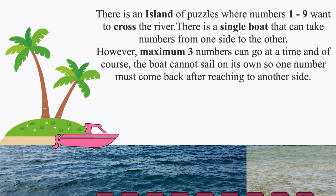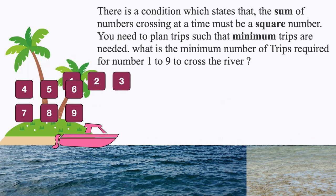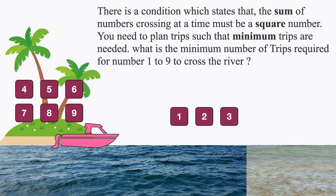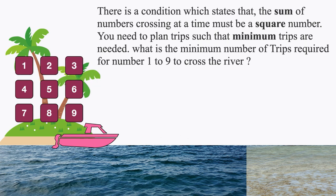There is an island of puzzles where numbers 1 to 9 want to cross the river. There is a single boat that can take numbers from one side to the other; however, a maximum of 3 numbers can go at a time, and the boat cannot sail on its own, so one number must come back after reaching the other side. Also, the sum of numbers crossing at a time must be a square number. For example, 1, 2, and 3 cannot cross because their sum is 6, which is not a perfect square. What is the minimum number of trips required for numbers 1 to 9 to cross the river?